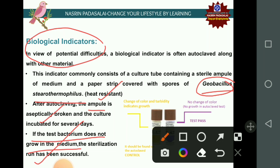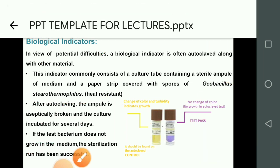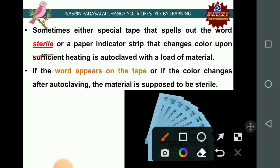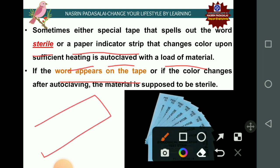If the culture medium is uncontaminated, there is no change in color. If contaminated, the color changes from purple to yellow — a change in color and turbidity indicates growth. Another method uses a special autoclave tape with the word 'sterile' printed on it, which changes color upon sufficient heating. If the word 'sterile' appears after autoclaving, the material is sterilized.